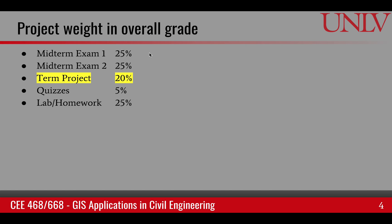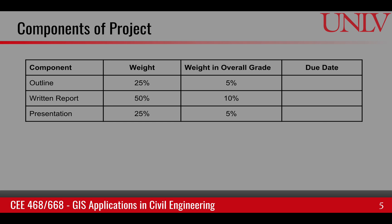The two exams are each 25% and quizzes and lab homeworks are 30%. The term project itself is 20%, which is a significant component, so it needs serious attention. Within the project, there are three main components: the outline, the written report, and the presentation, contributing 5%, 10%, and 5% respectively to the overall grade.